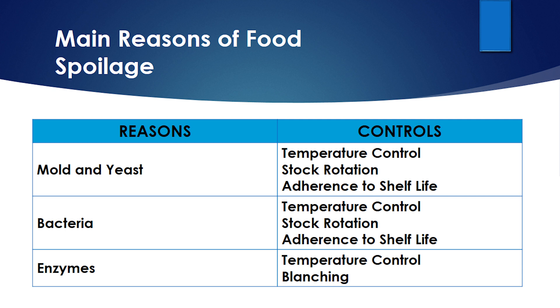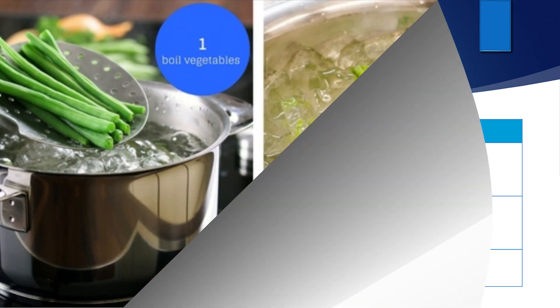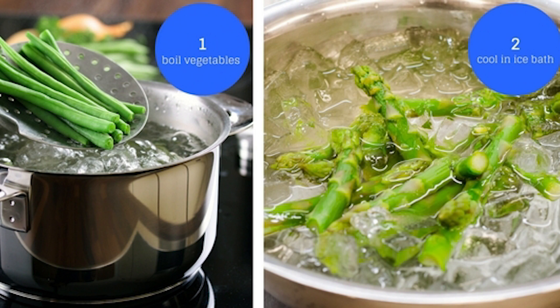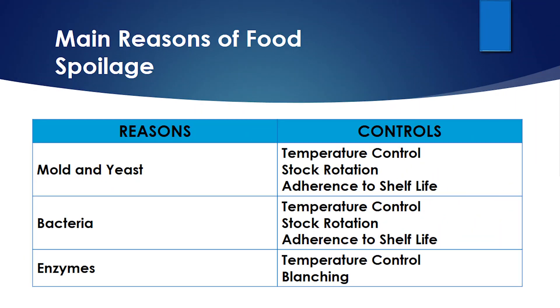For enzymes, there is a unique control in addition to temperature control — blanching. Blanching is done by submerging vegetables in very hot water to give a shock to the enzymes and stop their activity, because enzyme activity cannot happen above 60 degrees Celsius. Then immediately taking them out after a few seconds and submerging them into very cold water so that the heat will not further spoil the vegetables and enzyme activity is stopped. This is called blanching.